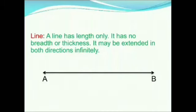A line has length only. It has no breadth or thickness. It may be extended in both directions infinitely. You can see that there are arrow marks on both sides, which means they can be extended infinitely on both sides. It does not have endpoints, which means it does not have a definite length.